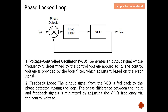The VCO, or voltage-controlled oscillator, generates an output signal whose frequency is determined by the control voltage applied to it. This control voltage is provided by the loop filter, which adjusts it based on the error signal. On the feedback loop, the output signal from the VCO is fed back to the phase detector, closing the loop. The phase difference between the input and the feedback signal is minimized by adjusting the VCO frequency via the control voltage.